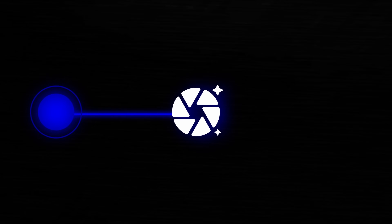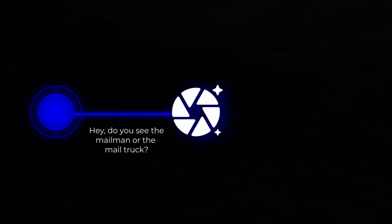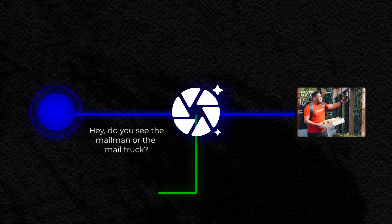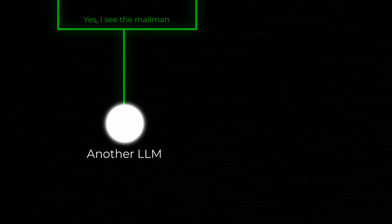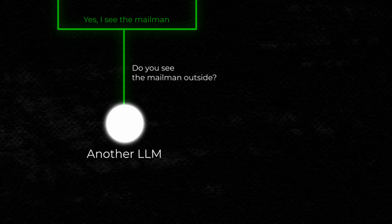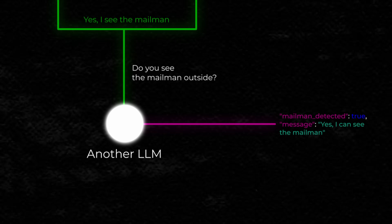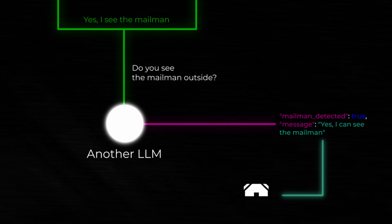The first LLM call would go to LLM Vision and simply ask: 'Do you see the mailman or the mail truck?' It will analyze the image and give a response. Once I get that response, I then send it to another LLM and ask a similar question, except I'm going to have it return the response as a structured element. I can then use that value to start changing things within my smart home. Now, is this over-engineering? Indeed it is, but who cares? It's awesome.